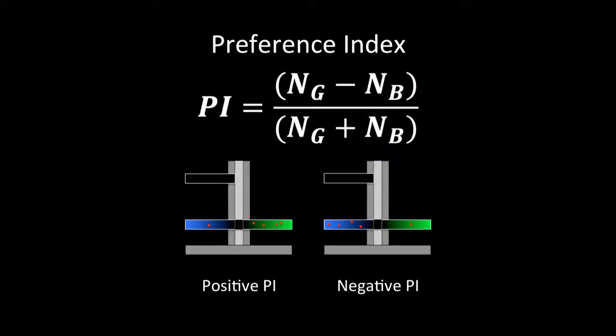This gives us something called the preference index, or PI. Essentially, if the flies prefer green light, we end up with a positive PI, and if the flies prefer blue light, we end up with a negative PI.